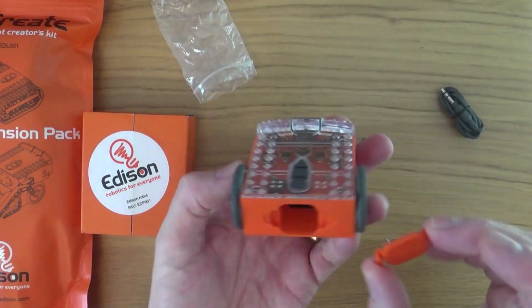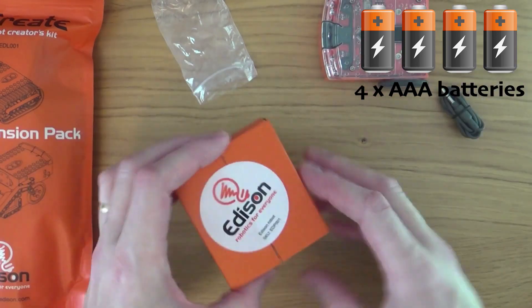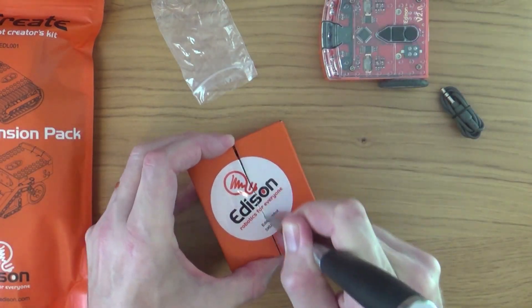As I said before, Edison has a battery compartment which takes four AAA batteries. This makes it a little different from the majority of robots in this series which are rechargeable.